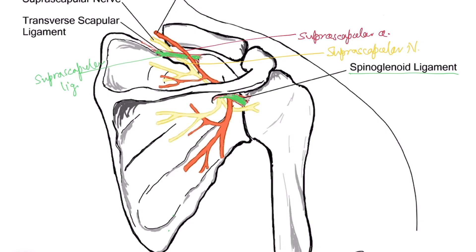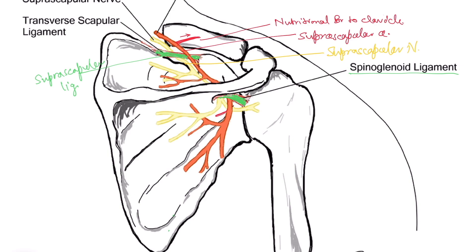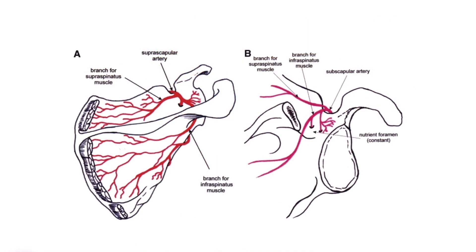In its course, the suprascapular artery provides nutritional branches to two bones. One is a nutritional branch to the clavicle. It also provides a nutritional branch to the scapula. Because the scapula is not a long bone, it will have various small branches given out from this artery to provide nutrition to the scapula. So remember, both the clavicle and scapula receive nutritional branches from the suprascapular artery.